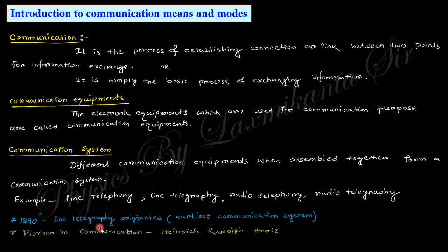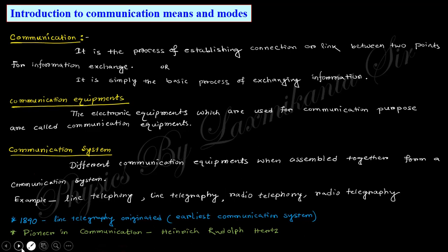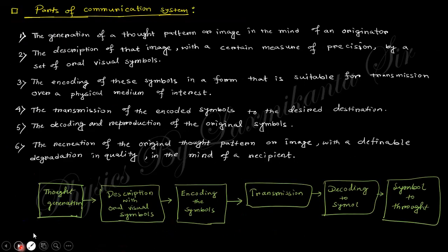The line telephone originated as the earliest communication system in 1840. The pioneer in communication is known as Heinrich Rudolf Hertz. Next is the parts of the communication system.